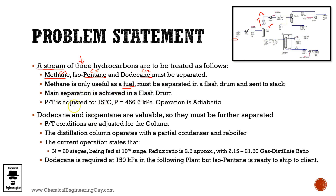The main separation is achieved in the flash drum. The stated pressure and temperature is adjusted to 15°C and about 4 atmospheres. Operation is adiabatic, meaning we are not adding or removing heat of any kind to the flash drum. The liquid stream, which should be dodecane and isopentane, is very valuable because you can sell them on the market as petrochemicals rather than combust them for energy. They will be further separated, and pressure and temperature conditions are adjusted for the column.